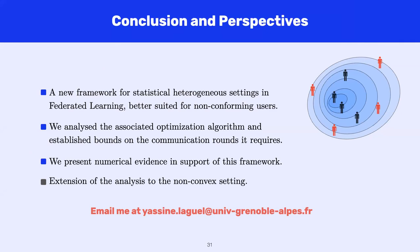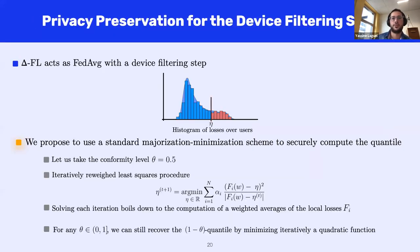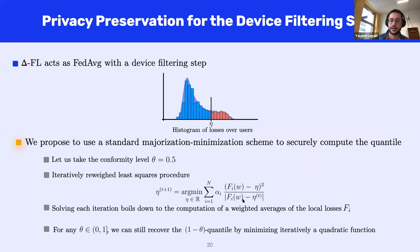I would like to ask about the practical limitations of this technique. You said you need to collect the loss from clients — is there any other information you need? Even the loss itself could be privacy-violating. However, we can perform the iterated reweighted least squares procedure to compute the quantile of the loss without sending the loss directly. To solve this, we only need averages and scalar multiplications, which can be done in a privacy-preserving manner.